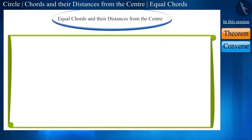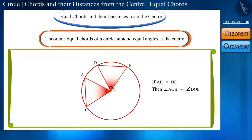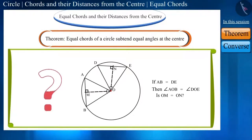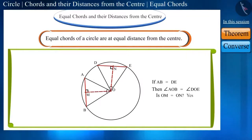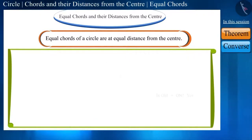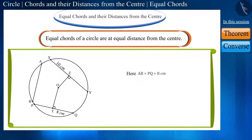But friends, if we draw equal chords, then what can you tell about the distance of these chords from the center? We know that equal chords of a circle subtend equal angles at the center. But will their distance from the center also be equal? Yes friends, equal chords of a circle are at equal distance from the center. To understand it better, let's draw another chord AB in this circle whose length is equal to PQ, i.e. 8 cm.